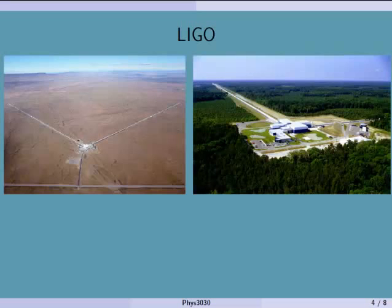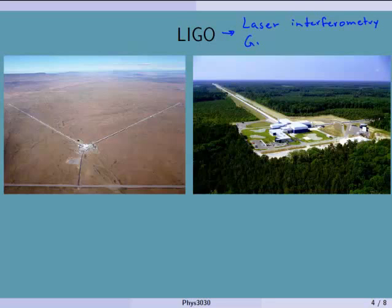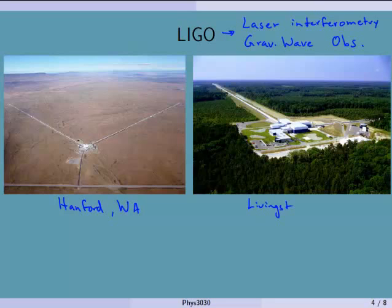Now I want to talk about how we would see these waves. Here are pictures of two observatories, both called LIGO — Laser Interferometry Gravitational Wave Observatory. These are laser interferometers. One is in Hanford, Washington, and the other is in Livingston, Louisiana. The reason we have them far apart is so that when they both detect signals, we can use the time difference to determine where a wave came from, since you can't point these instruments — they're basically pointed straight up.